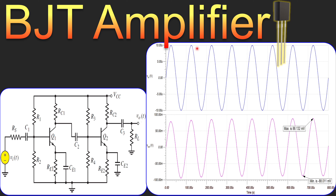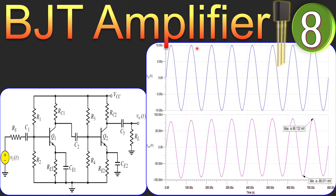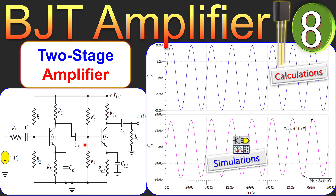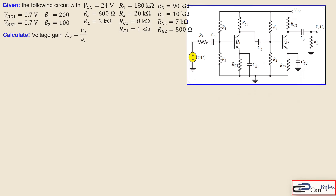Welcome back to a new video about BJT amplifiers. This is example number eight. In this example, we will look at a two-stage amplifier that produces much more gain than just a single stage amplifier. We will use two BJTs in cascade in a common emitter amplifier configuration, and they are AC coupled. We will work out everything step by step in calculations and verify these in our SPICE simulations.